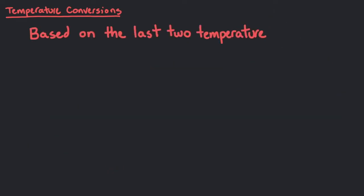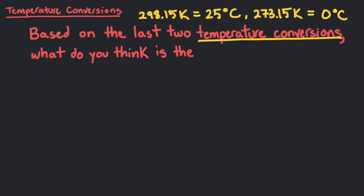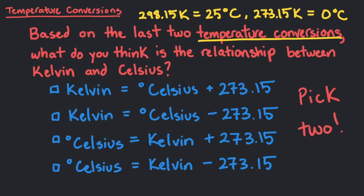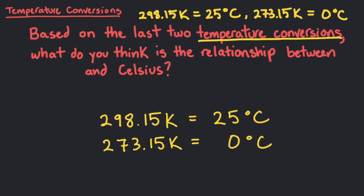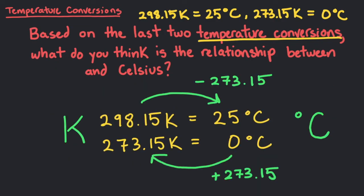Based on the last two temperature conversions, what do you think is the relationship between Kelvin and Celsius? Yes, the Celsius scale and the Kelvin scale have a fixed difference of 273.15 units.